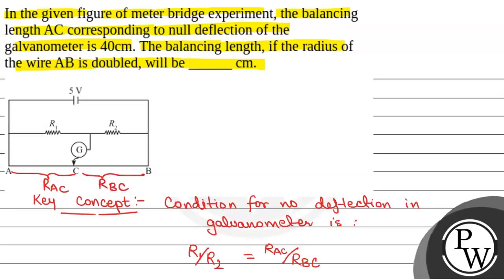Now RAC, if we assume initial cross sectional area or radius of this wire AB is R, so cross sectional area will be pi R square.